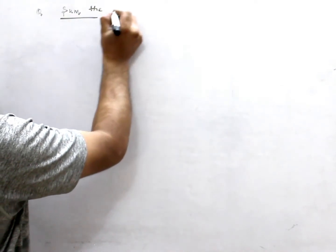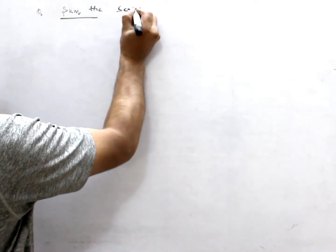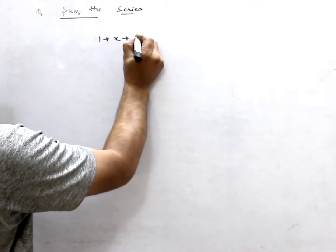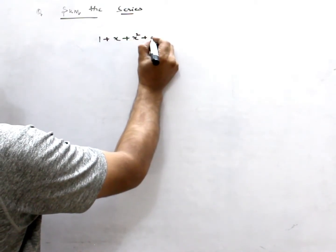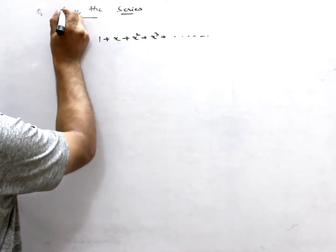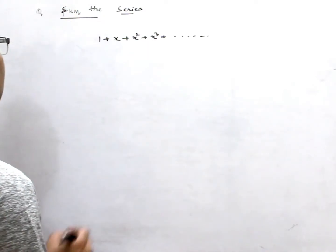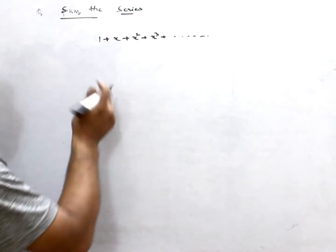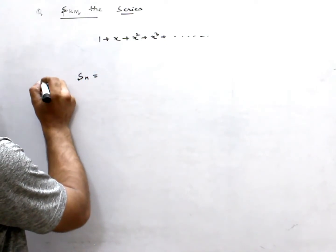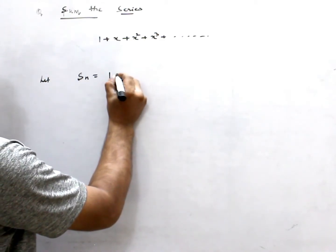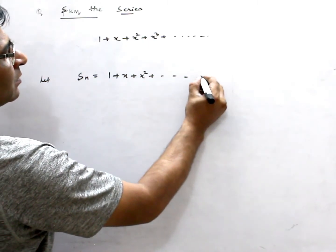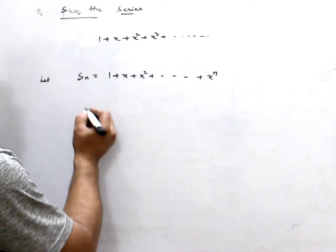Sum the series 1 plus x plus x squared plus x cubed, and so on. So here first we find Sn. Let Sn equal 1 plus x plus x squared plus x to the n.